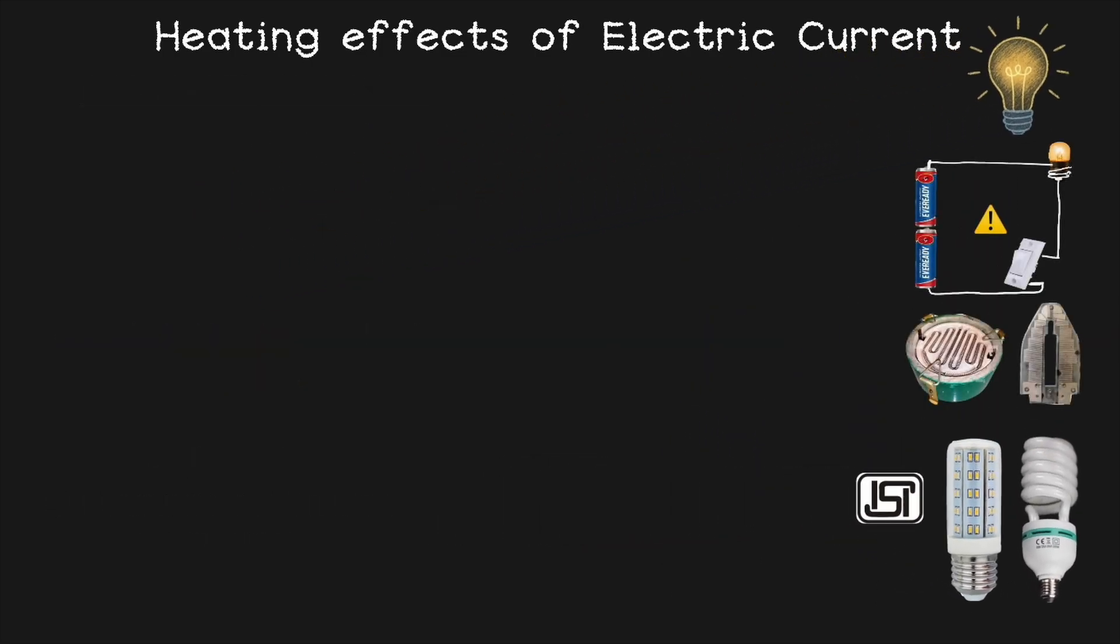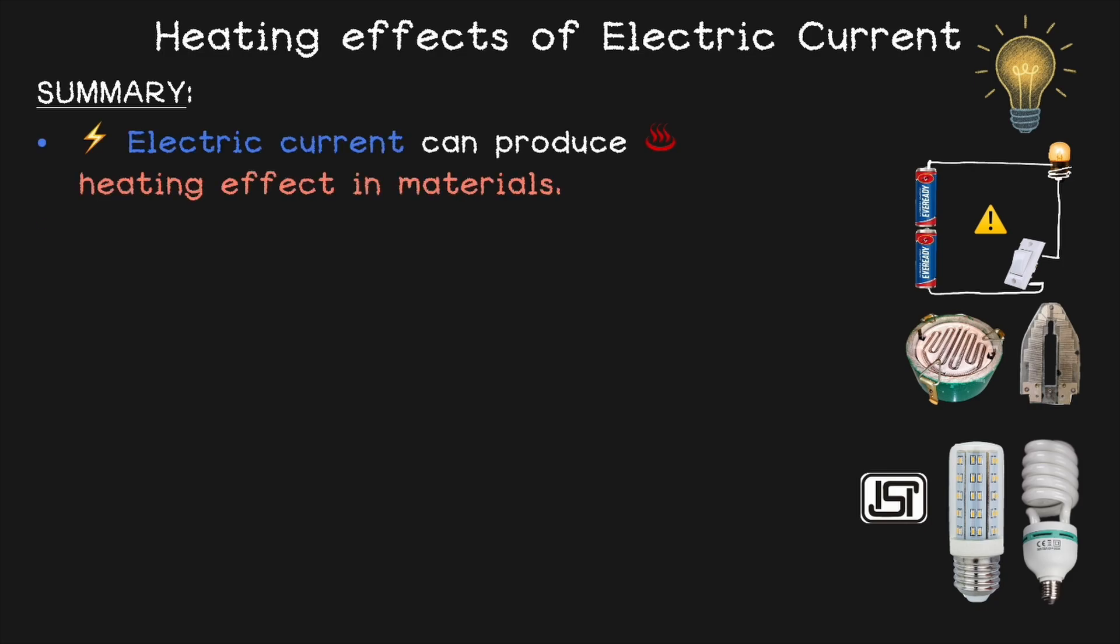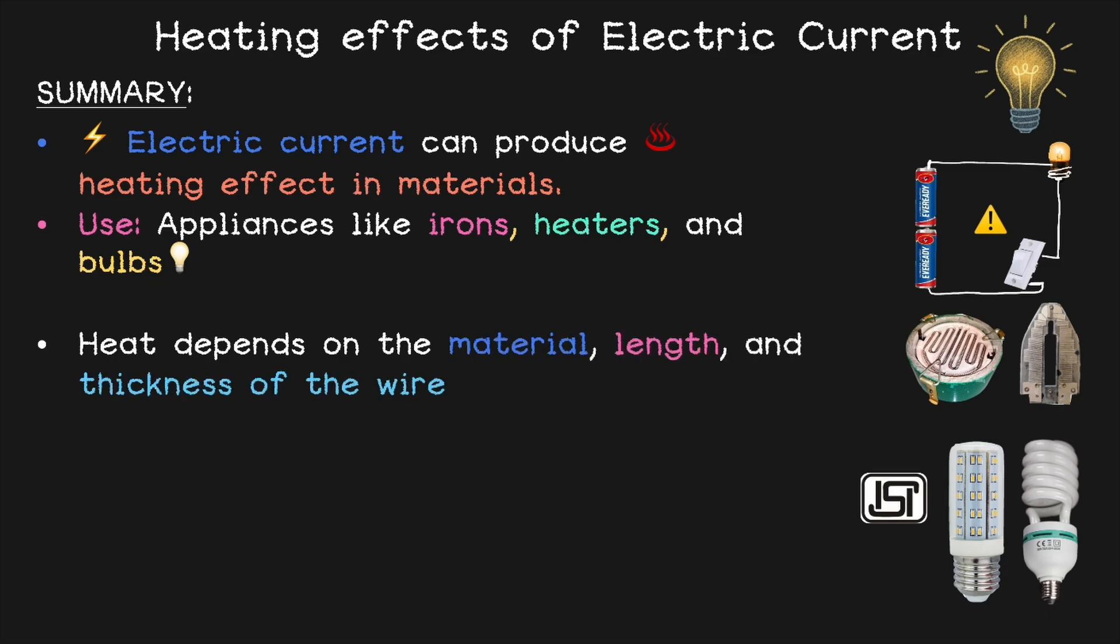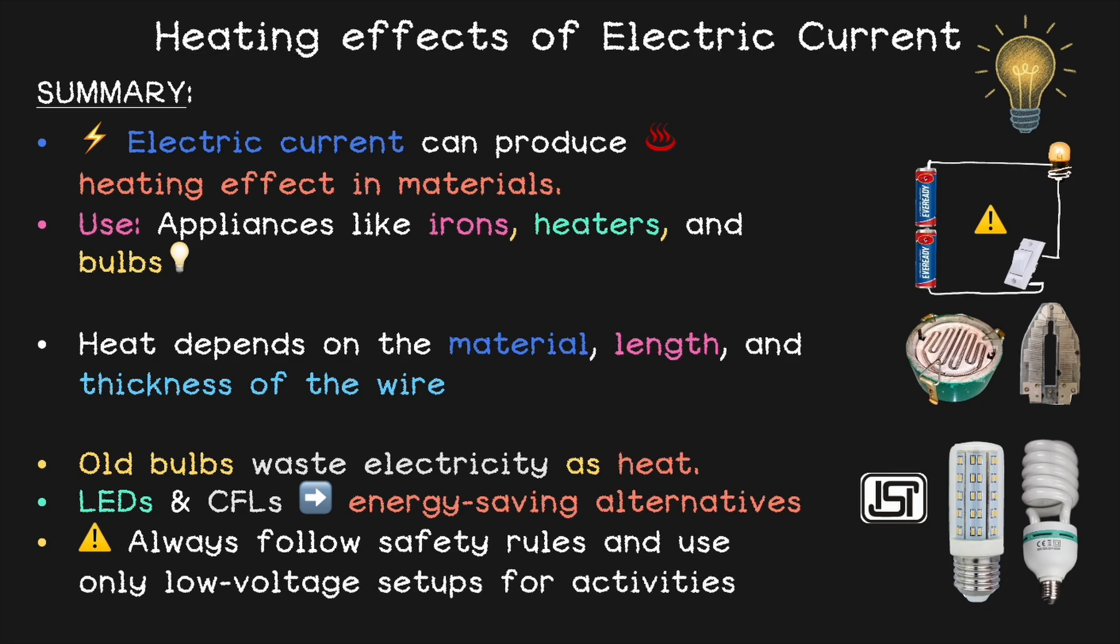So just to have a quick recap. What did we learn? We learned that electric current can produce heating effect in materials and we use this effect in appliances like irons, heaters and bulbs. Heat depends on the material, length and thickness of the wire. We also learned that old bulbs waste electricity as heat and as their energy saving substitutes we use LEDs and CFLs now and LEDs are preferred over CFLs. But the most important thing to understand while conducting all of these activities on your own is to always follow the safety rules and use only low voltage setups for the activities.